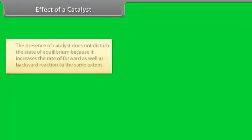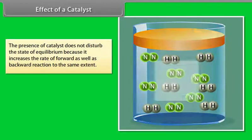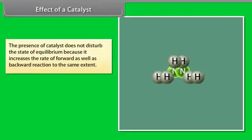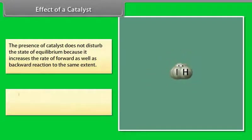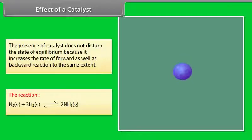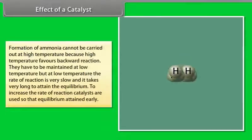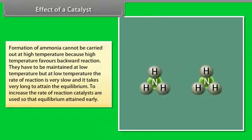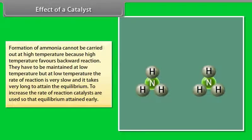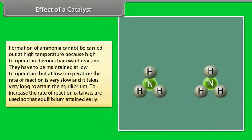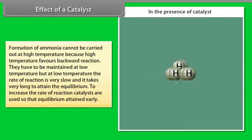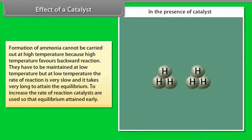Effect of a catalyst: The presence of a catalyst does not disturb the state of equilibrium because it increases the rate of the forward as well as the backward reaction to the same extent. For the formation of ammonia, high temperature favours the backward reaction so low temperature must be maintained, but at low temperature the rate of reaction is very slow. Catalysts are therefore used to increase the rate of reaction so that equilibrium is attained early.